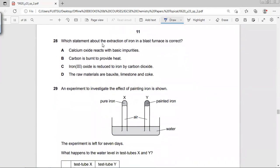Which statement about the extraction of iron in a blast furnace is correct? Carbon is going to provide heat because we need to melt the iron ore. Calcium oxide reacts with basic impurities? No, calcium oxide is already a base, it's a metal oxide, so it can't.